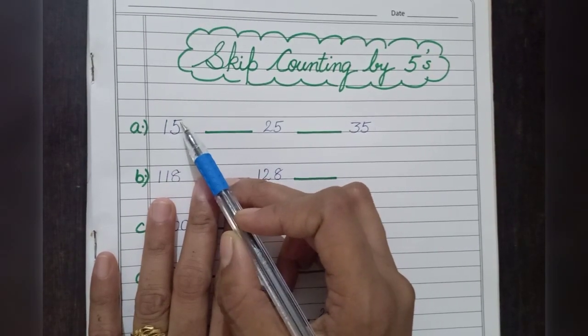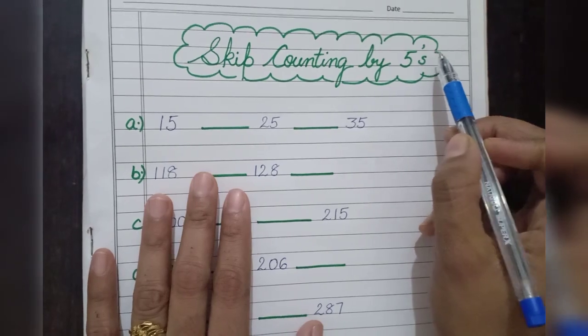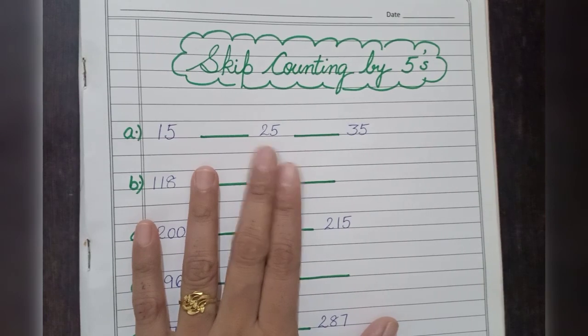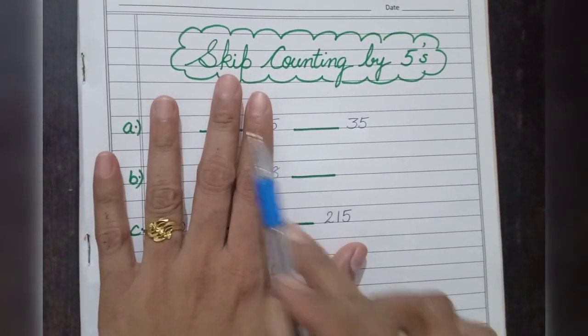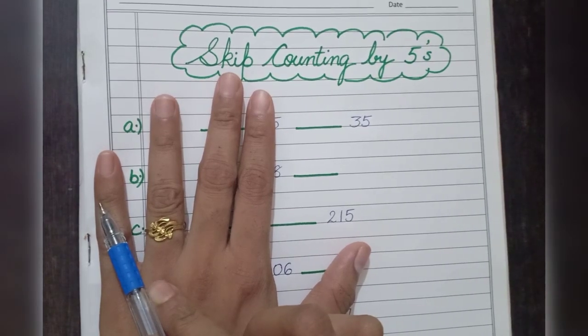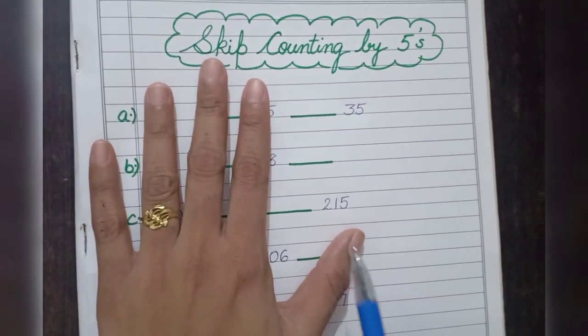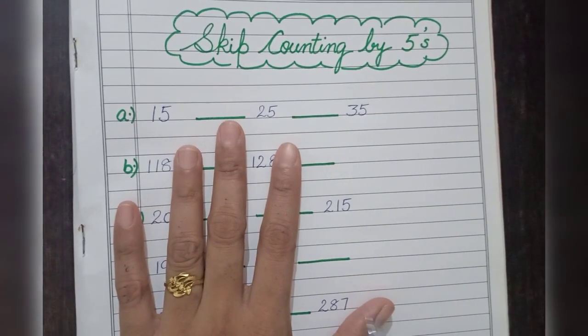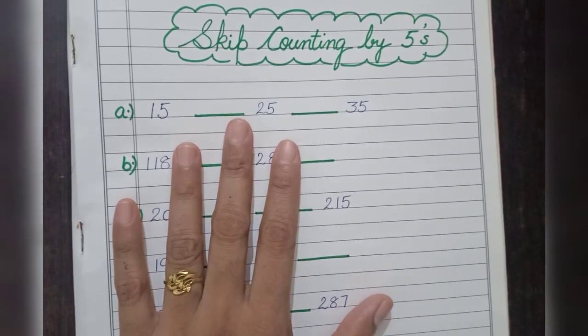So in skip counting of 5 we will add 5, and whatever number we are going to receive at the last finger - you can start from here and you can end up to here or you can start from here and you can end up to here - but make sure from wherever you are starting, the finger which is going to end with the counting, that we are going to end with the 5. Adding 5, that number exactly you need to write over here.